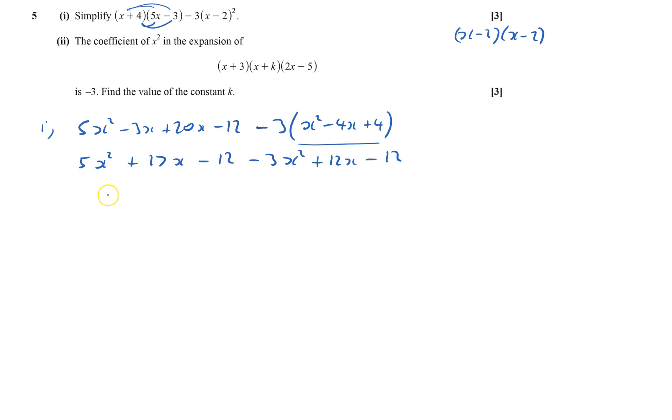What's that going to be? How many x squareds? I've got 2x squared. 17x plus 12x is plus 29x, and that'd be minus 24. That's the first bit.